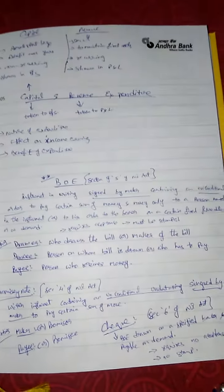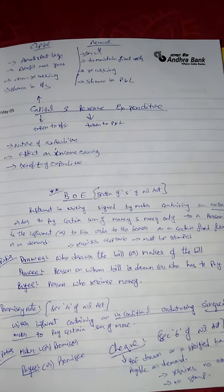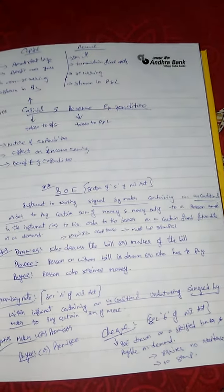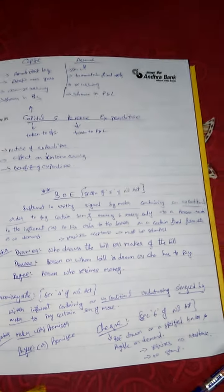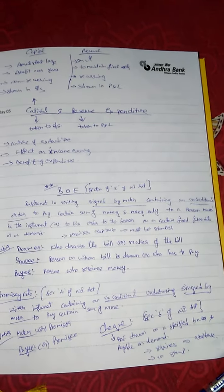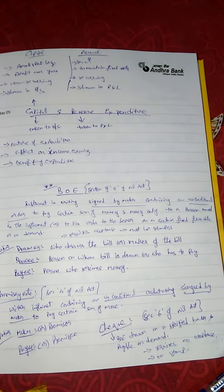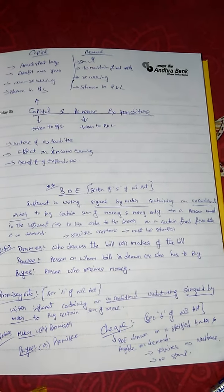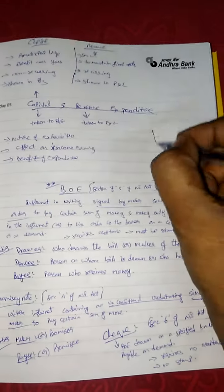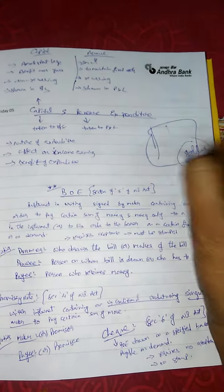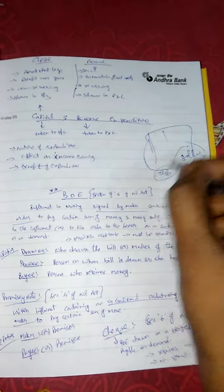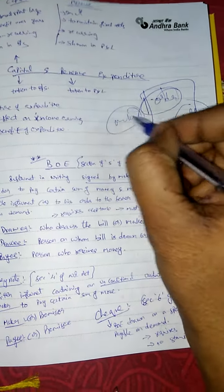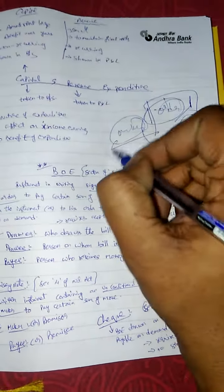Bill of exchange is defined as an instrument in writing, signed by the maker. The bill is made and signed by the seller — the maker of the bill — containing an unconditional order to pay a certain sum of money only to a specified person named in the instrument, or to his order, or to the bearer on a certain fixed date.